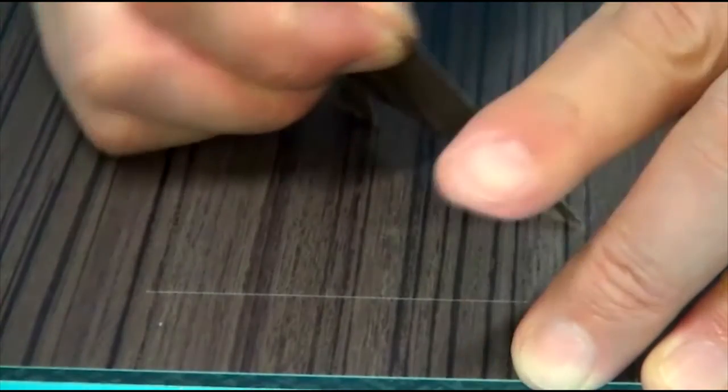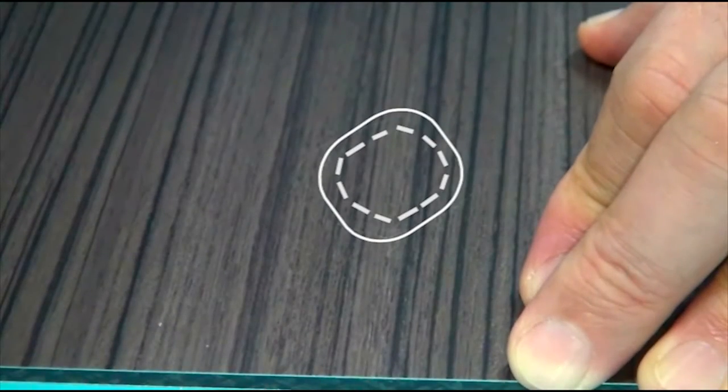The dotted line shows the outline of the damaged film that was removed. The solid line shows the repair piece you cut in a similar shape.